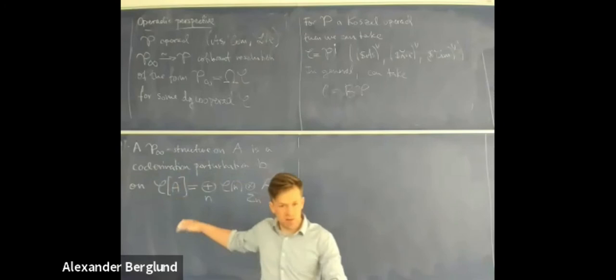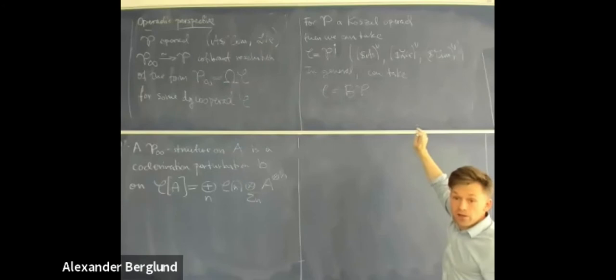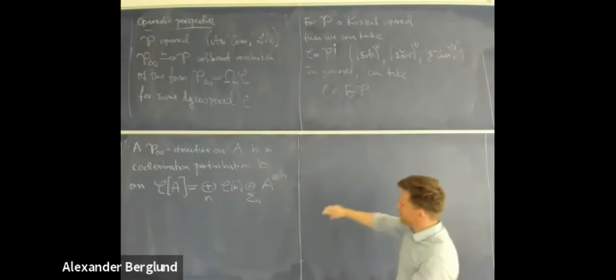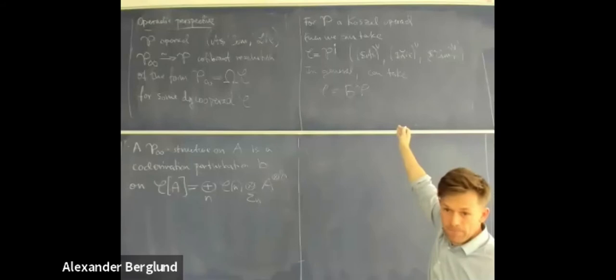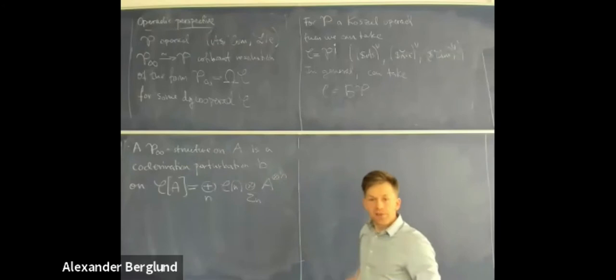This subsumes the examples discussed earlier. The shift that I always applied to the algebra — such as the tensor coalgebra on a shift of A — was hidden in the description of the Koszul dual cooperad, in the operadic shift. So when I take C equal to the dual of the shift of the associative cooperad and evaluate this, I get exactly the suspension of the thing I wrote down earlier, so it's essentially equivalent.